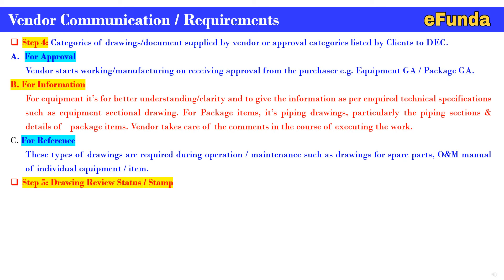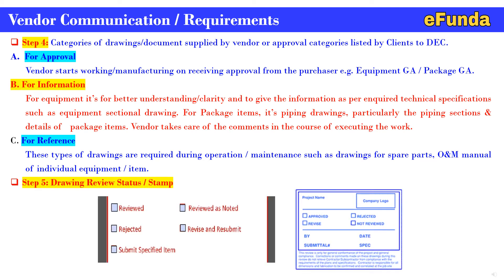Step 5 covers drawing review status and stamps. Once documents from the above categories are reviewed, one must ensure that the complete review cycle information and status are marked on the vendor document. Two types of stamps are typically shown: the first type includes reviewed, reviewed as noted, rejected, revised and resubmitted, and submit specified item; the second type includes approved, rejected, revised, and not received. These stamps are organization-specific, and one should refer to their organization's specific stamps and structure. This is how vendor communication and requirements are carried out as part of vendor document engineering review.